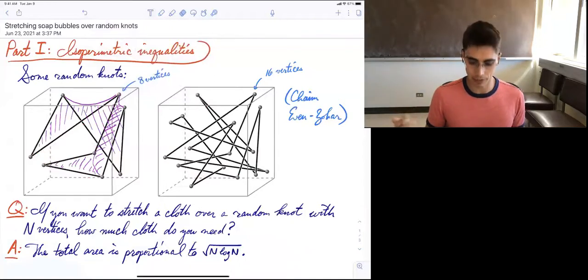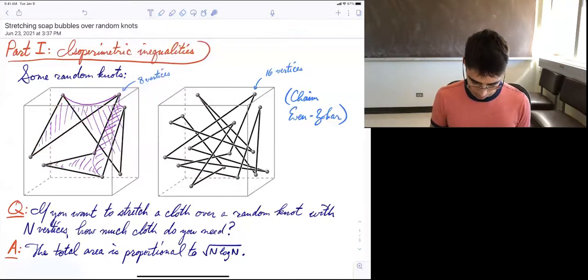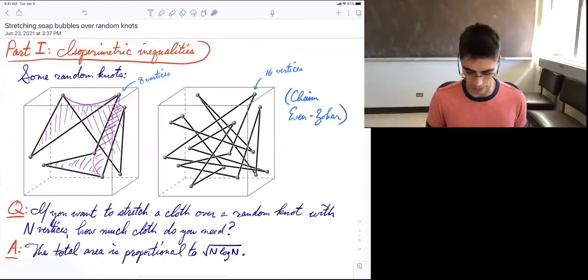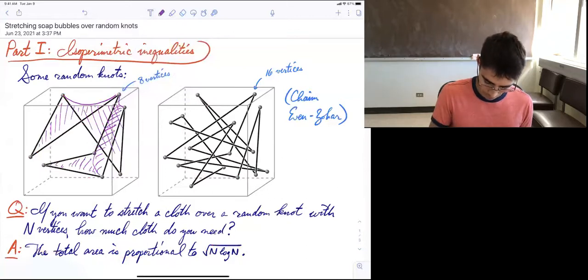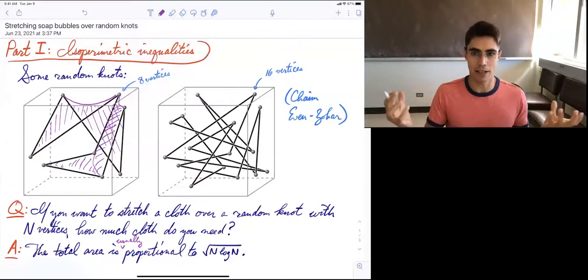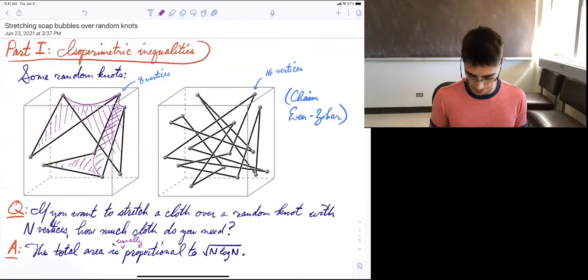And there's an answer. The answer is, if n is the number of vertices, so here it's eight, here it's 16, the total area is usually going to be proportional to square root of n log n. The word usually is doing some work here because this is a random thing and sometimes you're going to do badly, but usually it's about square root of n log n.